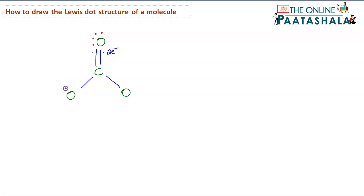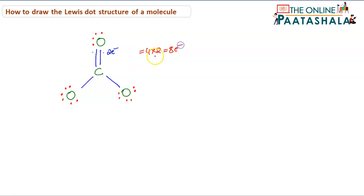Now count the total number of electrons in the final structure. The oxygen with the double bond has 4 electrons in lone pairs plus 4 bonding electrons making 8. The other oxygens each have 6 lone pair electrons plus 2 bonding electrons making 8. Counting all electrons across the structure gives a total of 24 electrons, which matches our original count.